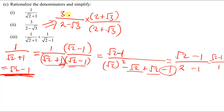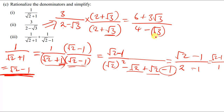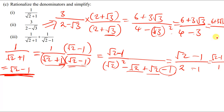Multiplying: 3 times 2 gives 6, and 3 times root 3 gives plus 3 root 3 in the numerator. In the denominator: 2 times 2 gives 4, and root 3 times root 3 gives negative root 3 squared, which is minus 3. So we have 6 plus 3 root 3 all over 4 minus 3, which equals 1. The final answer is 6 plus 3 root 3.